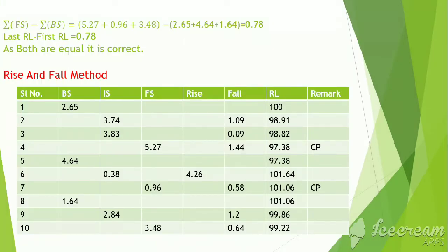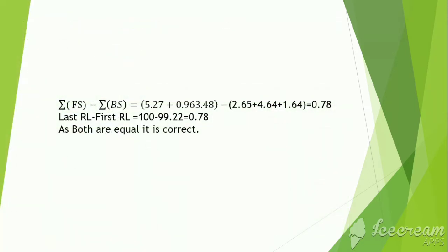The summation of foresight and the summation of backside differ by 0.78. And also, the last RL and first RL differ by 0.78. As both the differences are equal, hence our calculation is correct. Similarly, in rise and fall method, both foresight and backside are different. And both sides are equal as this implies that this is correct.